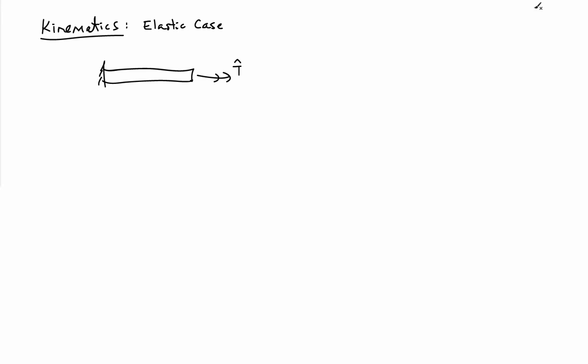Now for kinematics, let's look at the elastic case. Consider a thin-walled tube subjected to an end torque T̂. I'm going to use energy to get to the kinematics, so this won't be a particularly general kinematic result — it relies on the system being elastic. If I apply an end torque onto the tube, it's going to have a rotation theta, and the work in is going to be one-half T̂ theta. The work stored in the tube is the integral of one-half tau squared over G over the volume of material — the strain energy density one-half tau²/G, with just one shear stress, tau_zs.